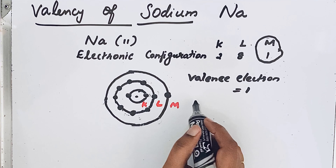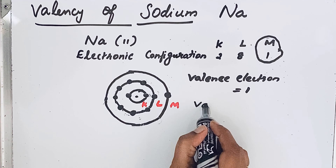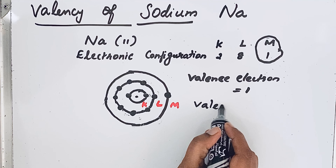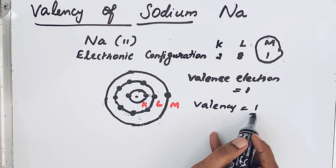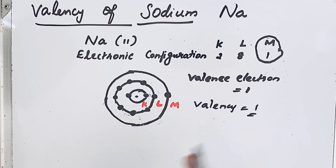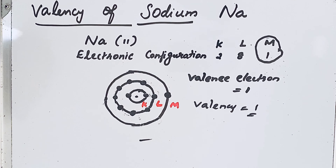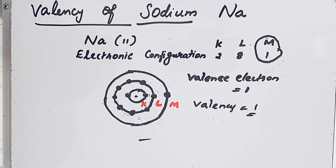So the valency of sodium is only 1, which is equal to its number of valence electrons. Thanks for watching.